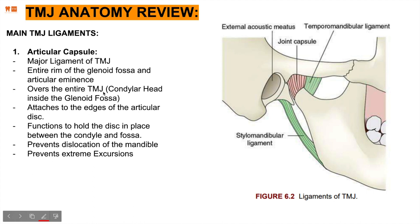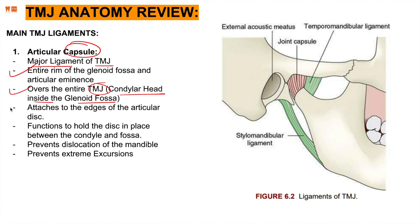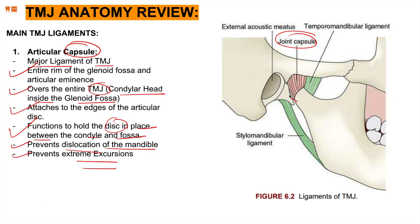The articular capsule is the major ligament — it's the entire rim of the glenoid fossa and articular eminence covering the whole joint space, the entire TMJ condylar head inside the glenoid fossa. It attaches to the edges of the articular disc and holds the disc in place between the condyle and fossa. Think of it as a blanket of tissue covering the entire condyle. It prevents dislocation of the mandible and prevents extreme excursion, controlling movements that could harm the joint.